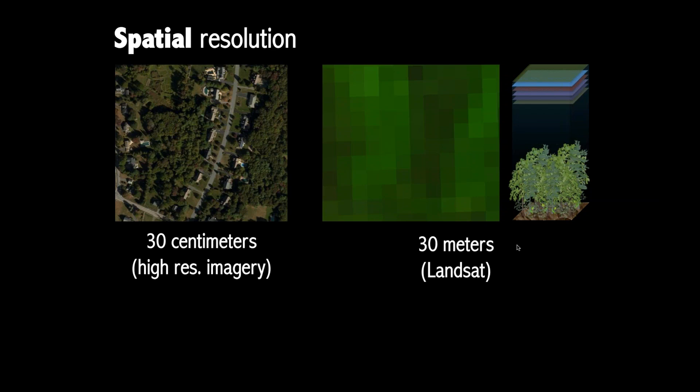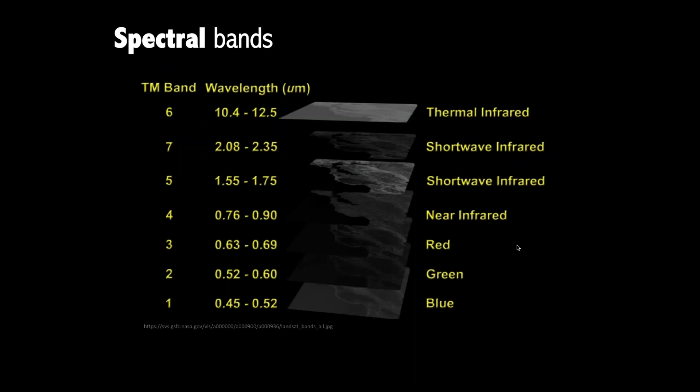What we get is an average reflectance over a 30 by 30 meter square. Looking at two pictures of the exact same area, in the high-res image we can see all the houses, roads, and trees. In the Landsat image we get a blurrier green blob. But while Landsat may have a coarser spatial resolution, it has the advantage of having seven different spectral bands — up to ten bands on the newer sensors — which means the sensor can see beyond what the human eye can see.